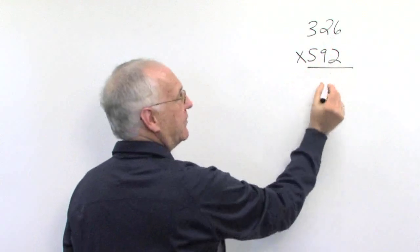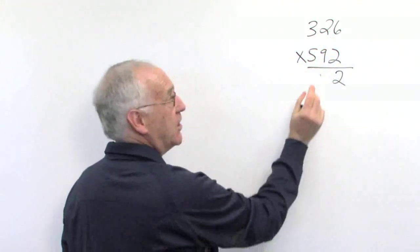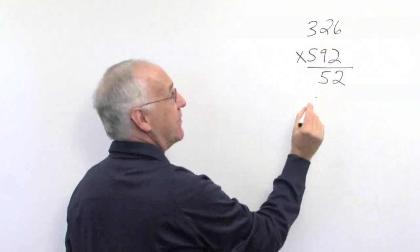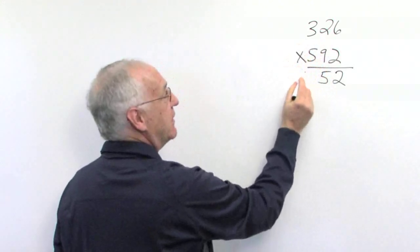2 times 6 is 12. Now we're carrying the 1. 2 times 2 is 4 and one more is 5. 2 times 3 is 6.